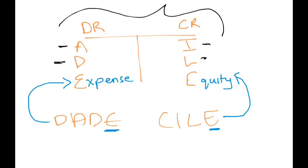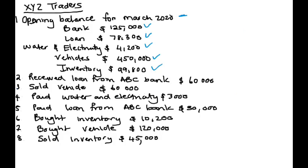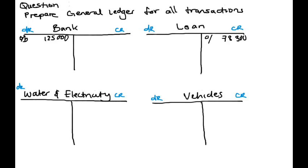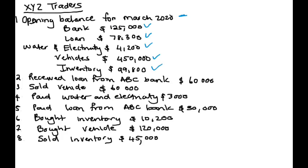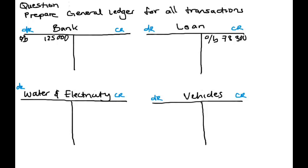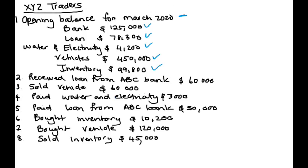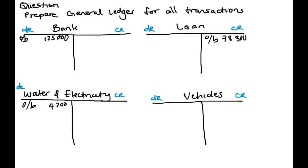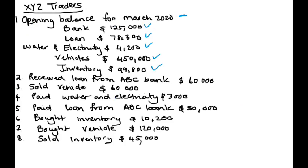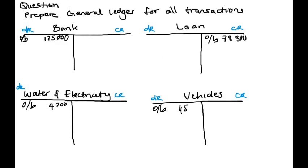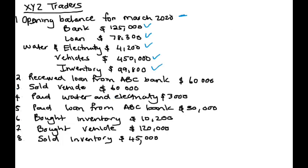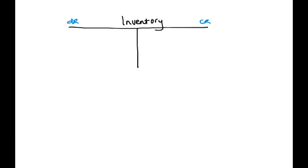Please watch our previous video for more information, as I have explained that there. So we have our loan for $78,300 — that's our opening balance. And we have our water and electricity, $4,200 — it's an expense, so we will add it on the debit side. Opening balance. Then we have our vehicle, $450,000 — that's an asset, so it's on the debit side. Finally, we have our inventory of $99,800 — it's an asset. That is our opening balance.